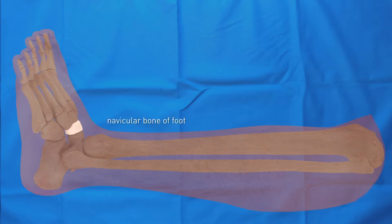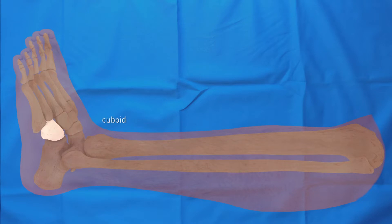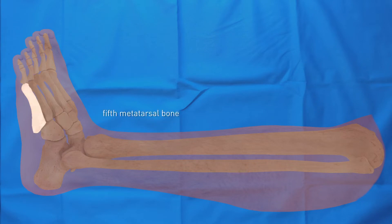The navicular bone of the foot articulates with the talus posteriorly and with the medial cuneiform, middle cuneiform, and lateral cuneiform bones anteriorly. The cuboid is located on the lateral side of the lateral cuneiform bone. The fifth metatarsal bone is the most laterally located of all the metatarsal bones. The fibularis brevis muscle attaches to the base of this bone, which is shown later in this film.